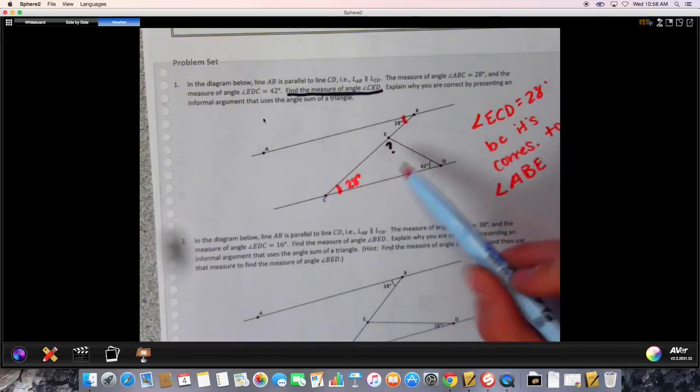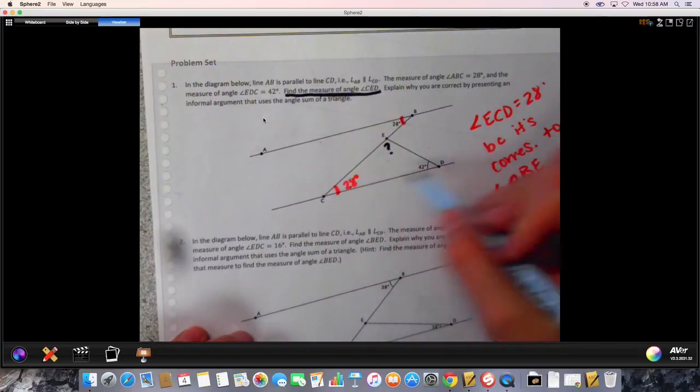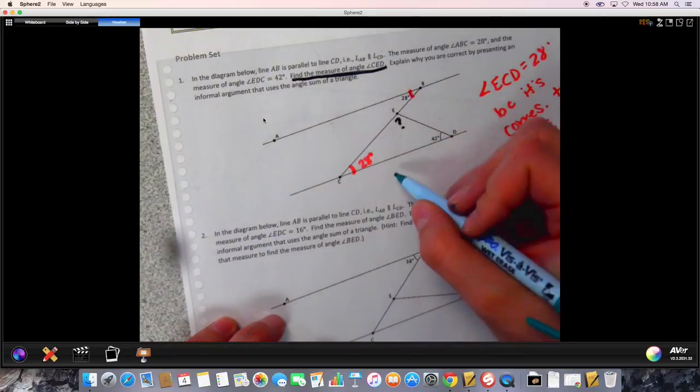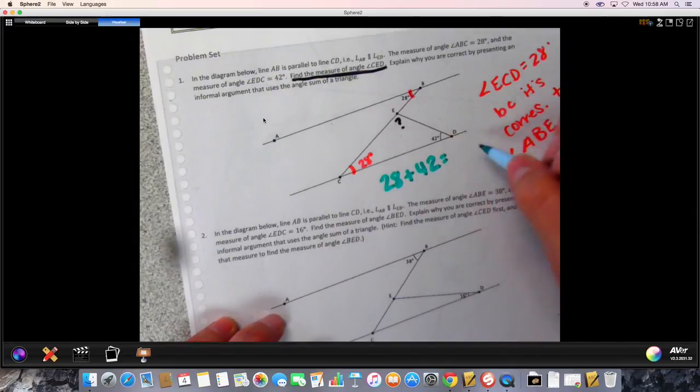We're going to use this information now to figure this angle out. On the previous page, we showed that every triangle should equal 180 degrees. With that information, if this is 28 and this is 42, we can add our 28 plus our 42 to get 70 degrees total there.